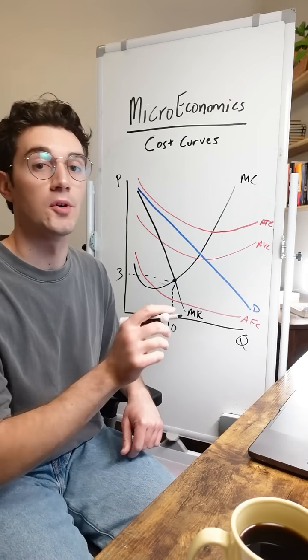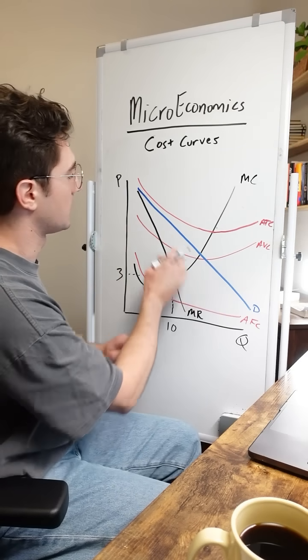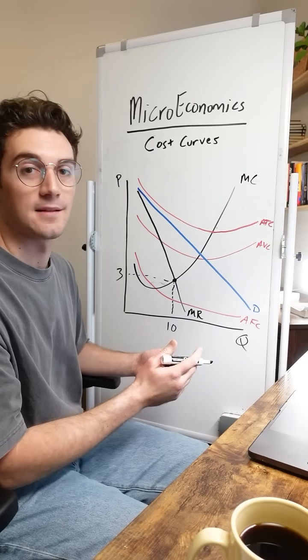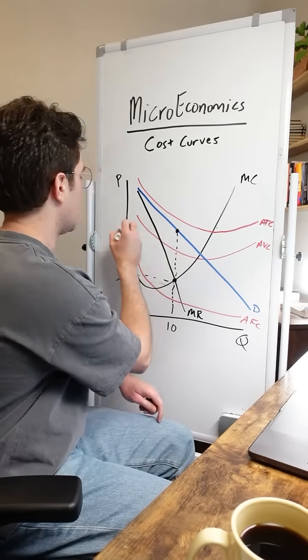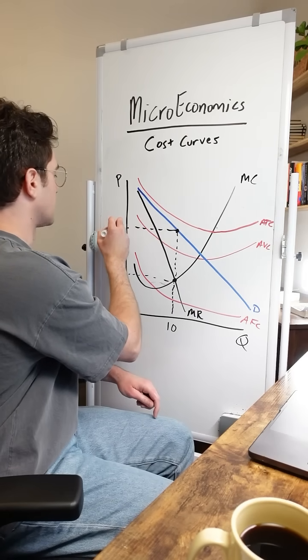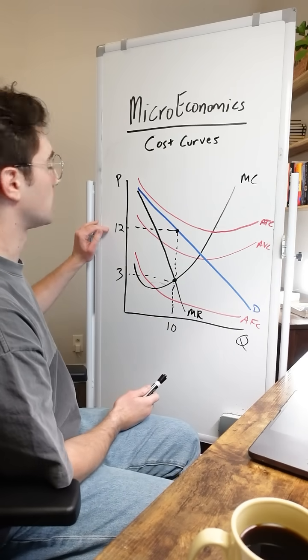It's only with perfect competition that you can go to the left to derive price. When we're working with a monopolistic firm that derives price off the demand curve, or at least has that luxury to do so because of their market power, we go up to the demand curve and then to the left to derive price. We'll say 12 bucks here.